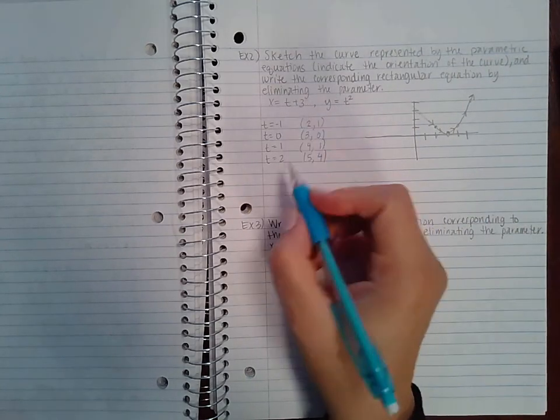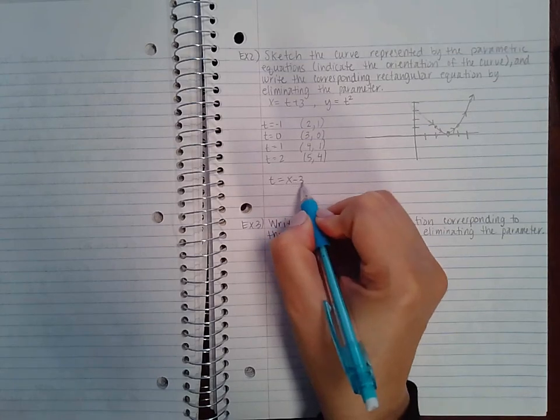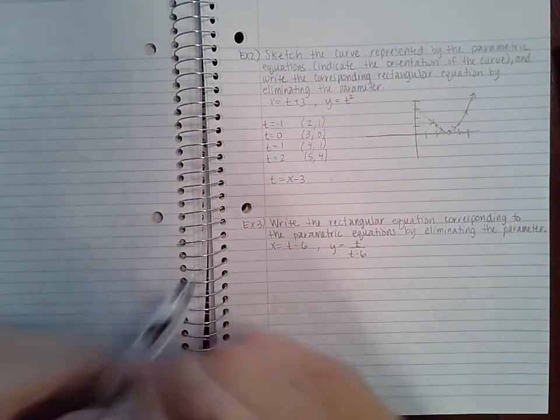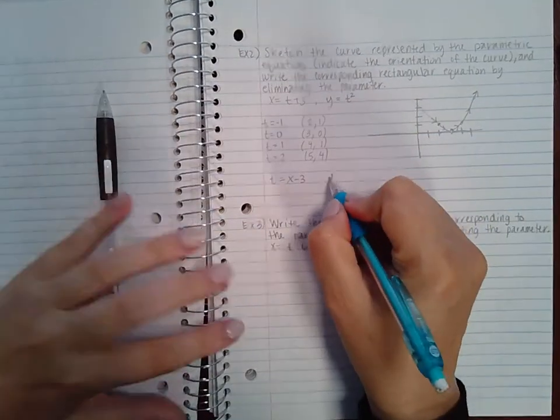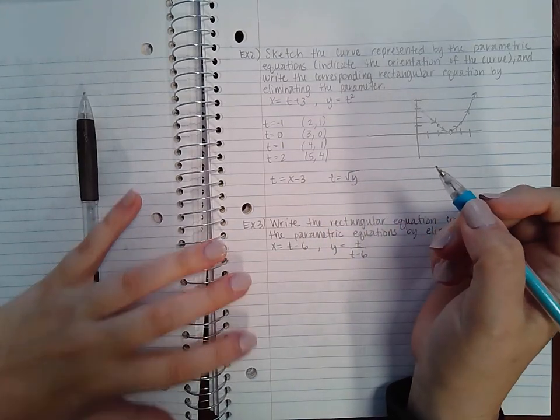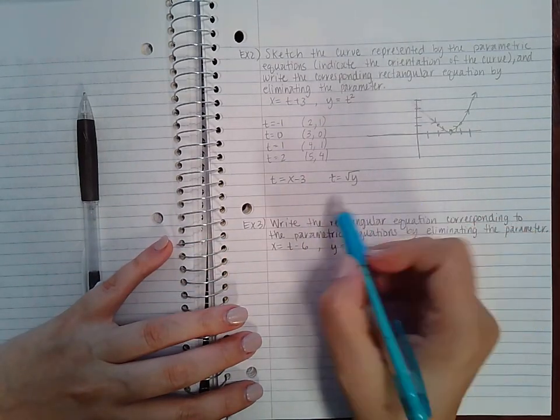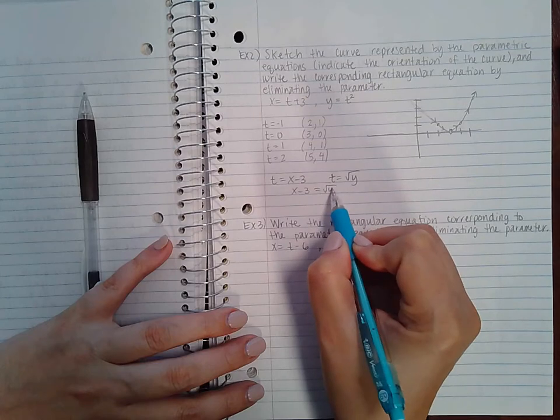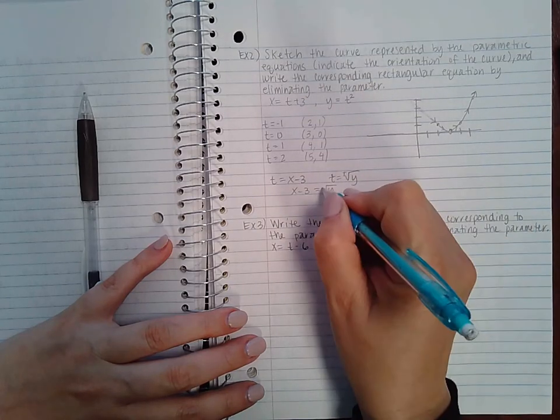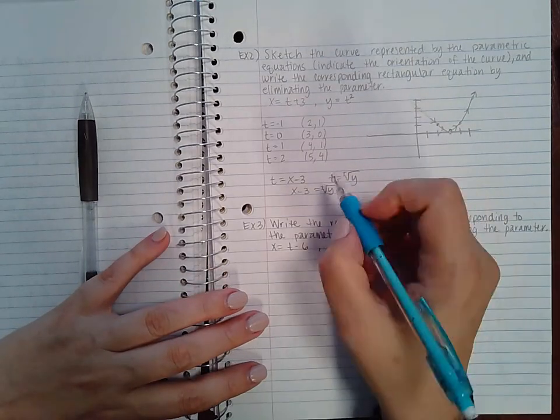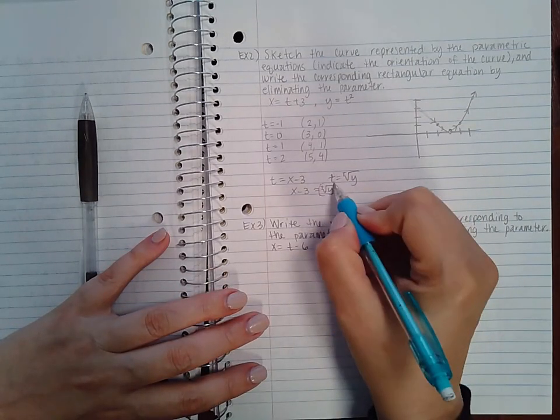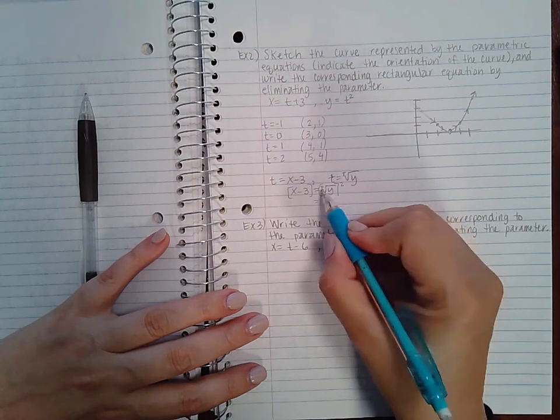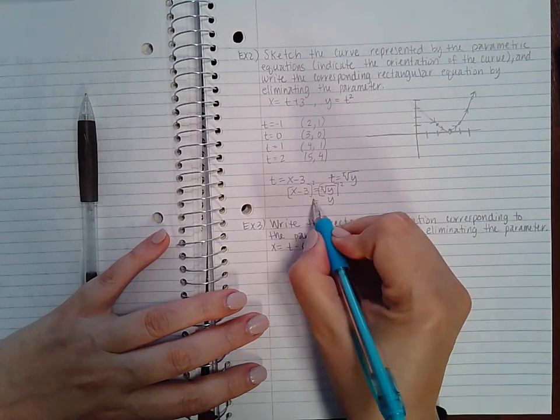So let's see. If we take this and we solve for t, we get t equals x minus 3. If we take this one, we get that t equals the square root of y. So then if I go and I take these equal to each other, and this really would be plus or minus, so there really is like two equations here. However, in order to solve for y, I would have to square each side, and then it wouldn't matter if it were plus or minus, because when I square it, it's going to come out positive.